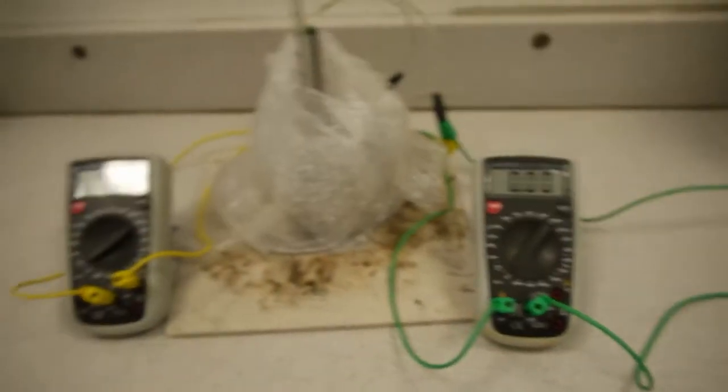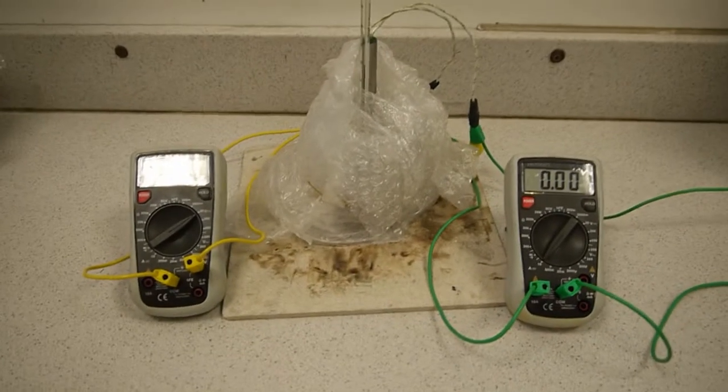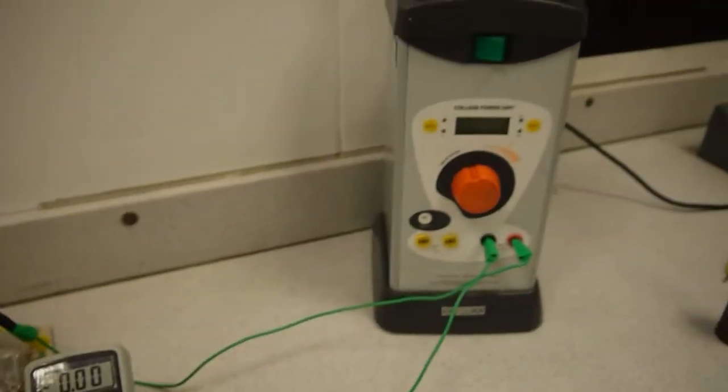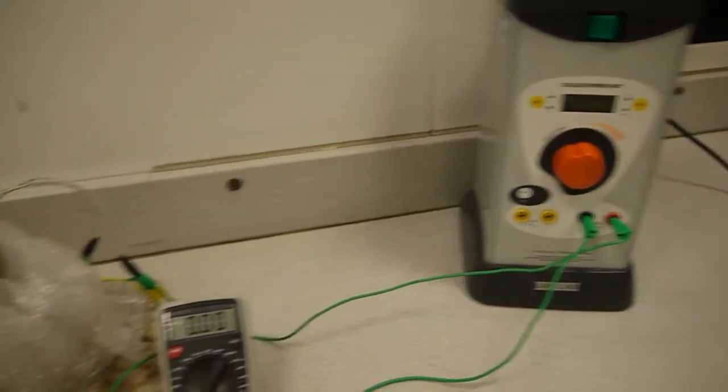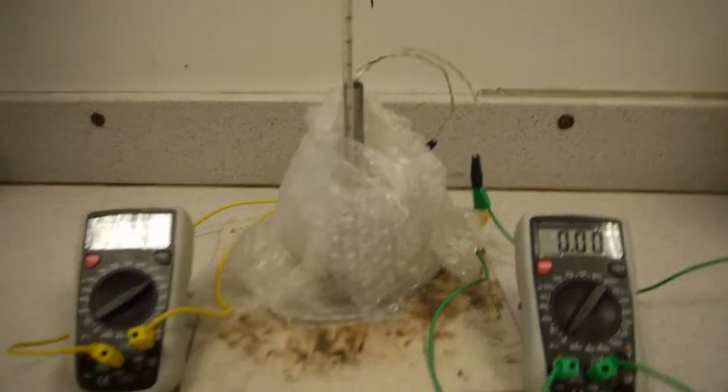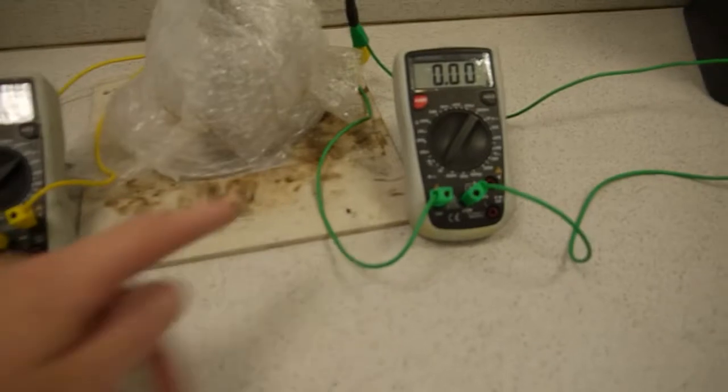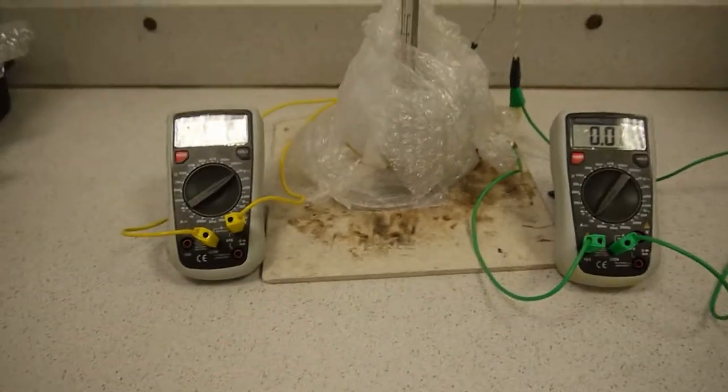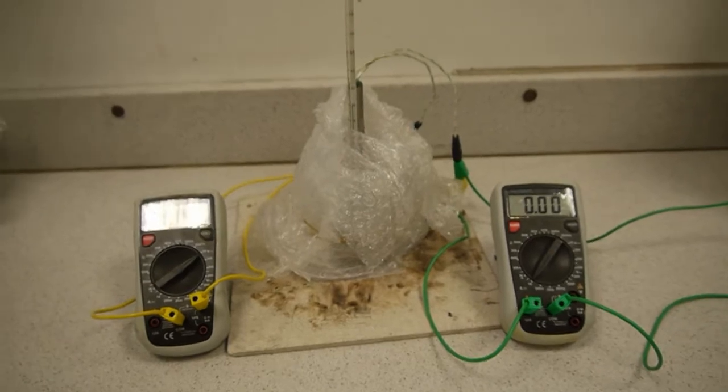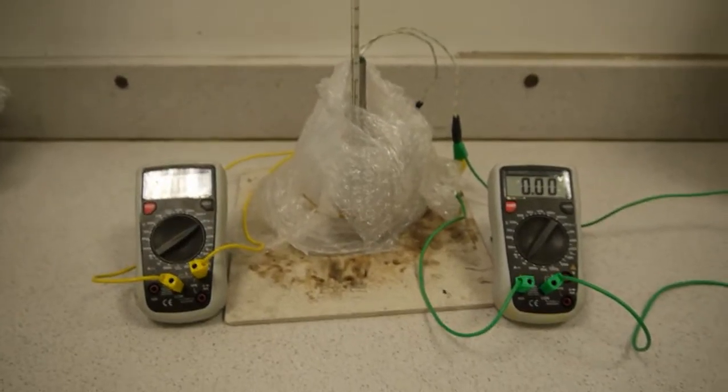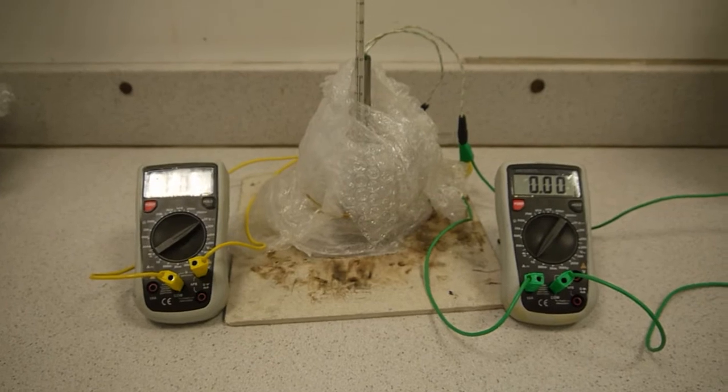Now that everything's set up and ready I can turn the power supply on and I can start recording the temperatures with the alcohol thermometer here every minute for 10 minutes. I'm also going to make sure that I record values of current and values of voltage because I'm going to use those to plot a graph to find the specific heat capacity of the aluminium which is wrapped up under all of that bubble wrap.